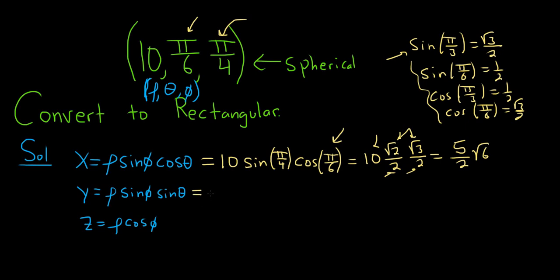Y is equal to rho, so 10. And again, sine phi, so sine of pi over 4. And then sine of theta, so theta is pi over 6. So this is equal to 10, square root of 2 over 2. How convenient I wrote these here, that worked out nice. Sine of pi over 6 is 1 half.